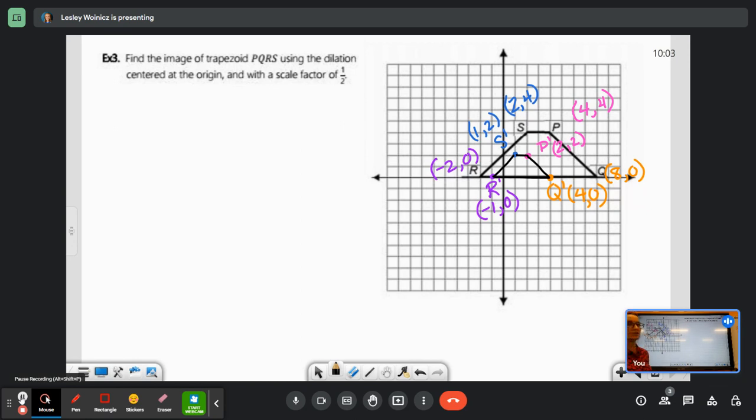So here's a fun thing. All those lengths of the sides are half, but the area is like way less than half. Isn't that fun?